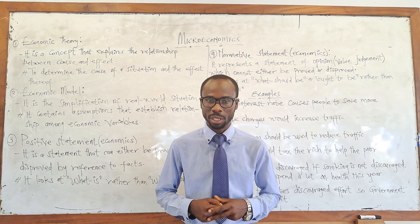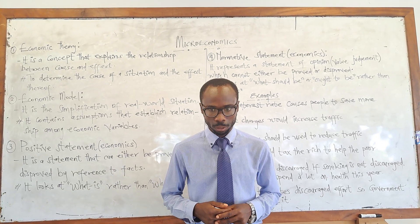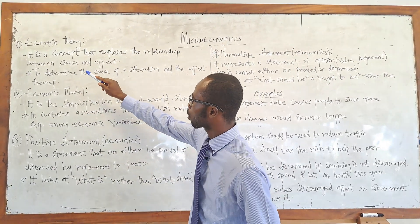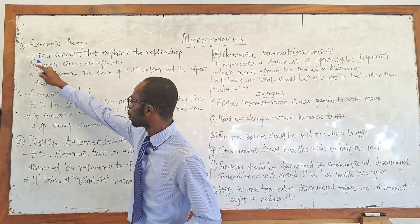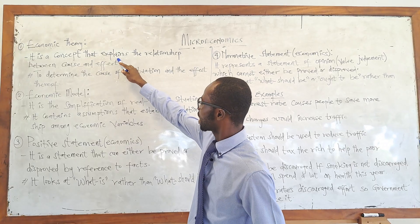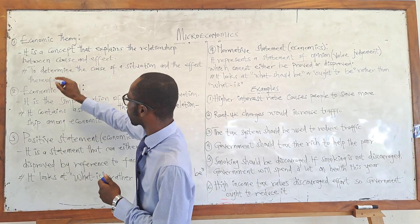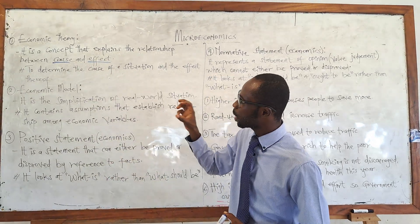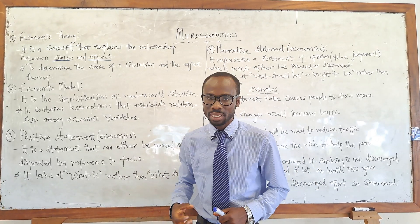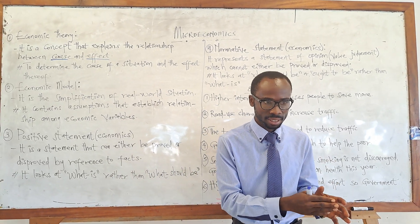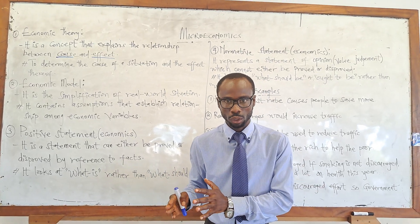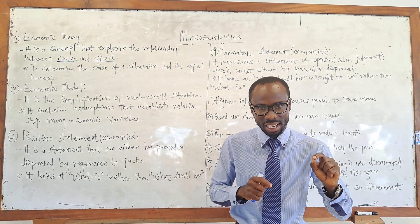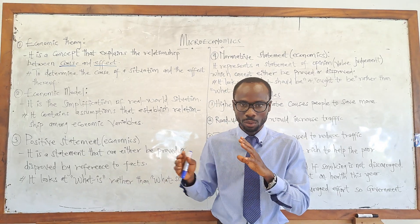From there, we also looked at economic theory and economic model. So we said that economic theory is a concept that explains the relationship between cause and effect. Economic theory talks about the cause and the effect — what will be the effect of a given action? The main aim of economic theory is to determine the cause of a situation or economic phenomenon and the effects thereof.